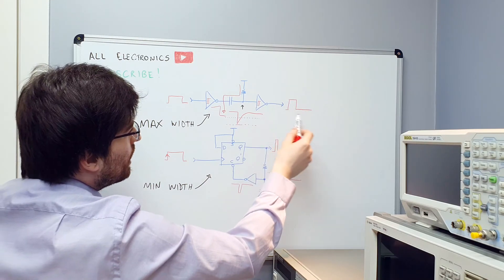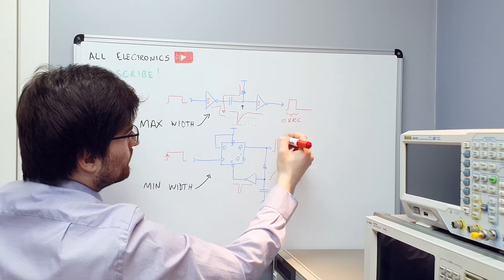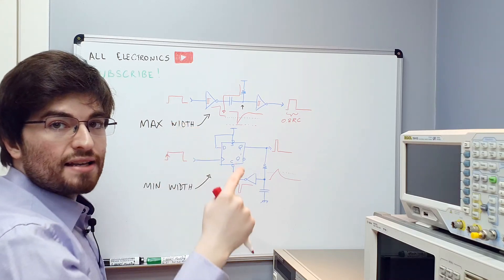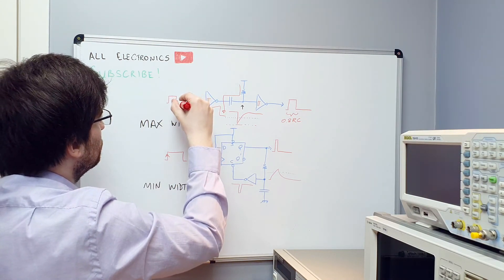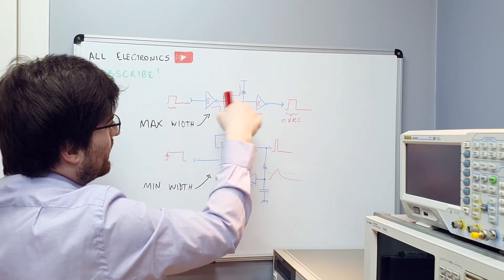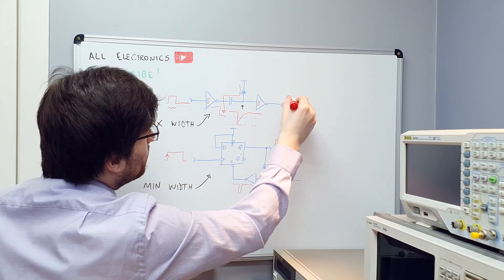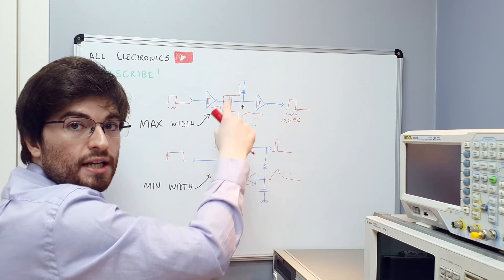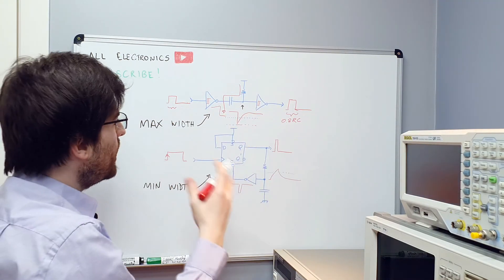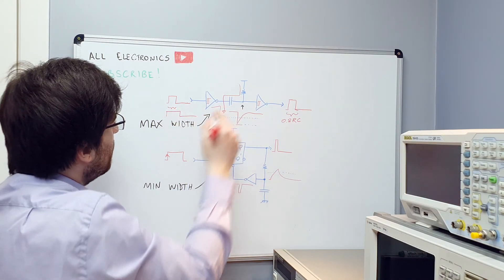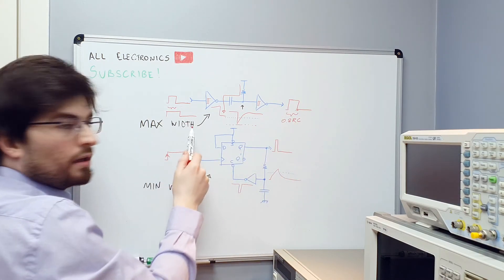You have a constant width pulse on the output. This pulse width is approximated by 0.8RC — this is a coarse approximation. If the input width is less than the pulse that would be generated by the RC network, the output will go down before and will have the same width. So in this circuit, the output width is equal to the input until a maximum limit is reached. When the input width goes above the RC constant, the output will be limited to the RC constant. With this top circuit, you can limit the max width of the output.